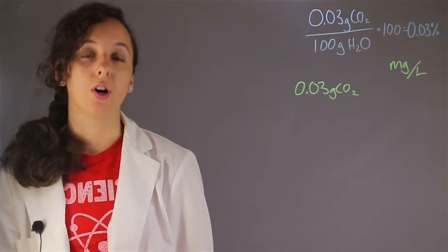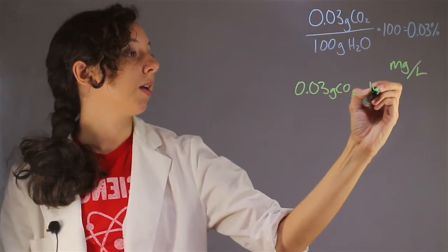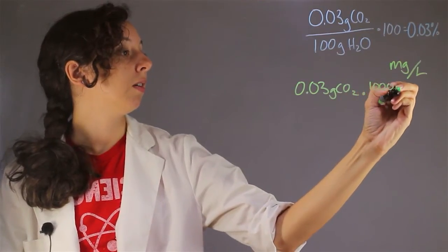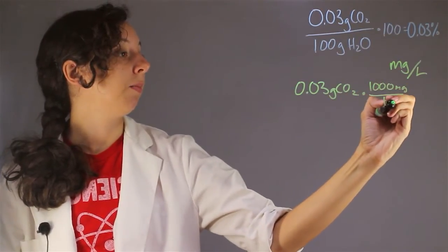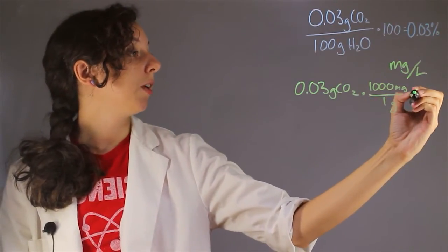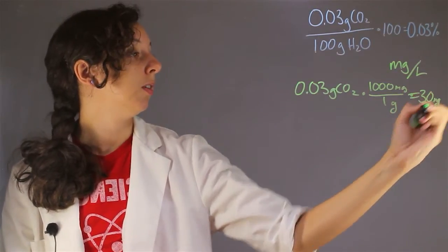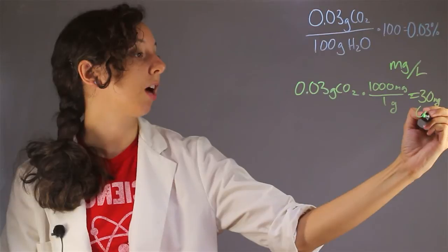And to convert to milligrams, all we have to do is multiply by 1,000. This is because there are 1,000 milligrams in every one gram. That's just a basic conversion. So multiply, and we're going to get 30 milligrams. So that's how many milligrams of carbon dioxide we have.